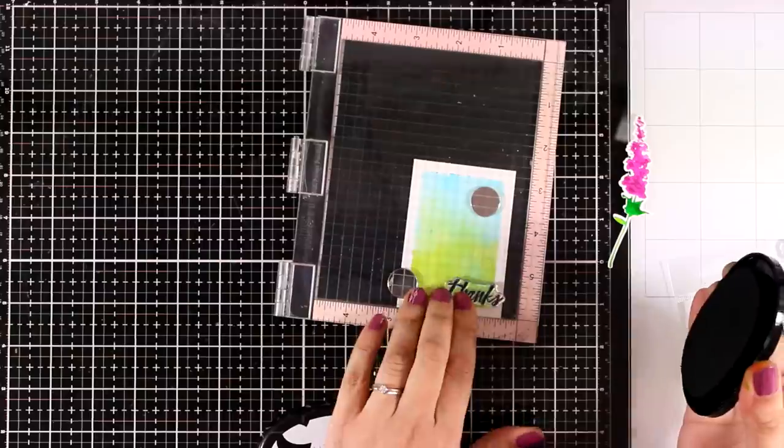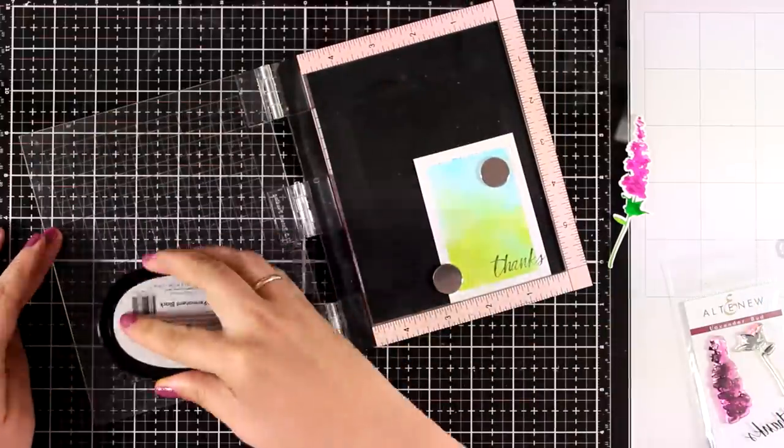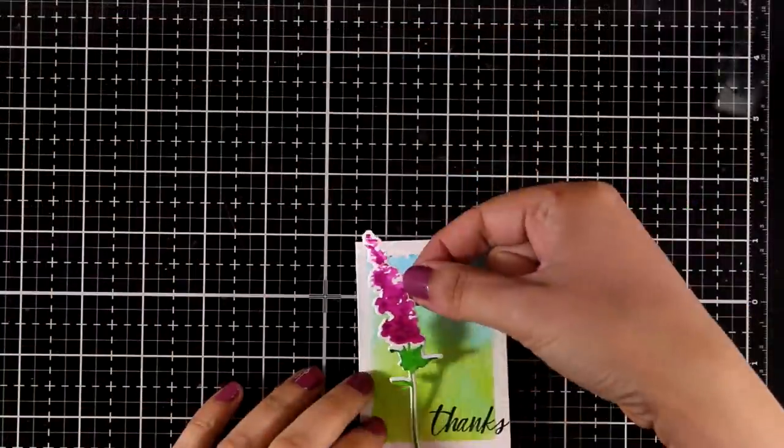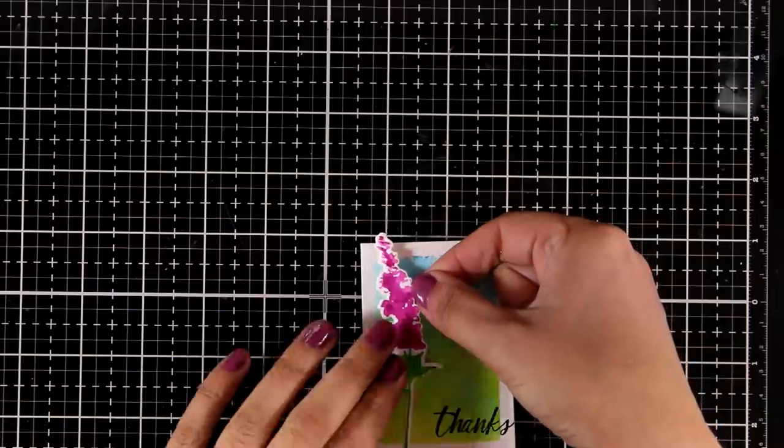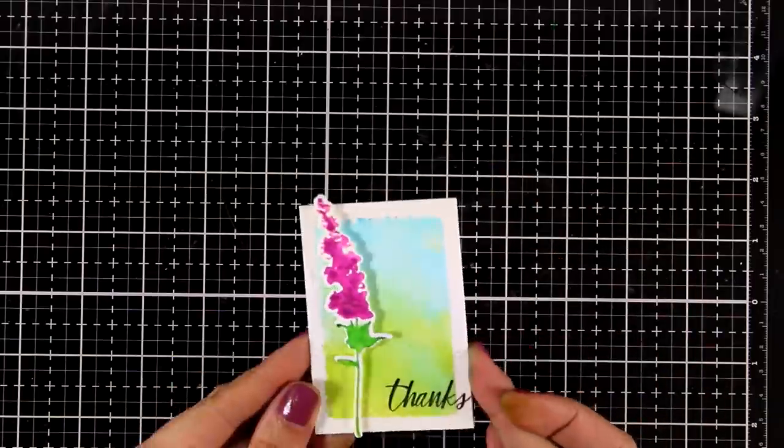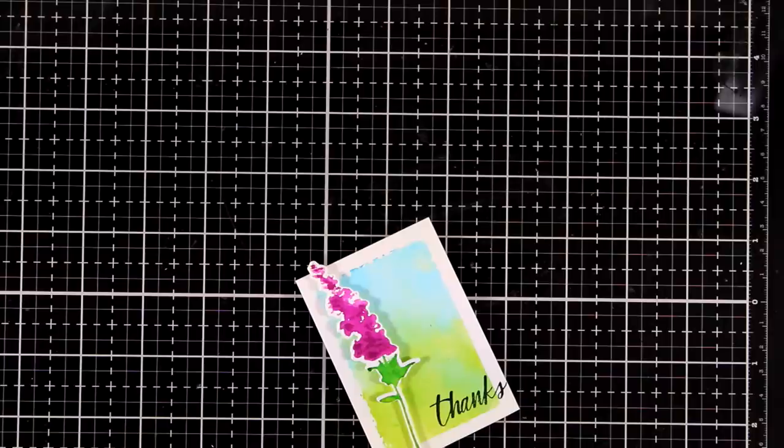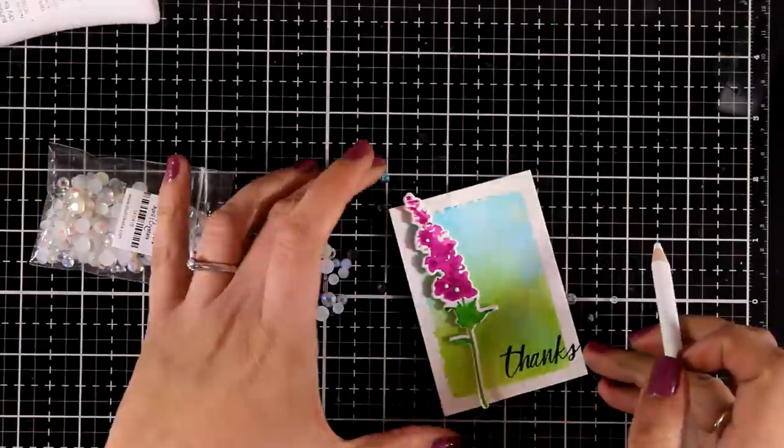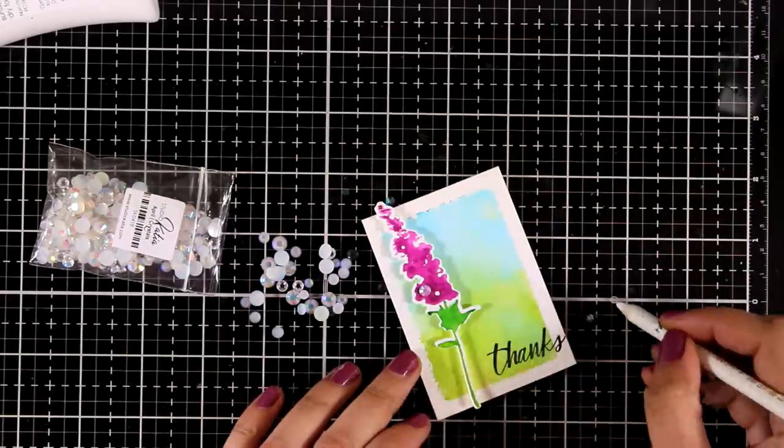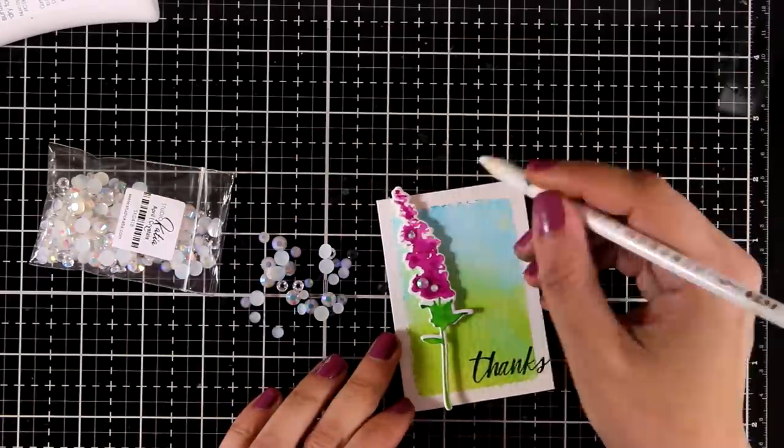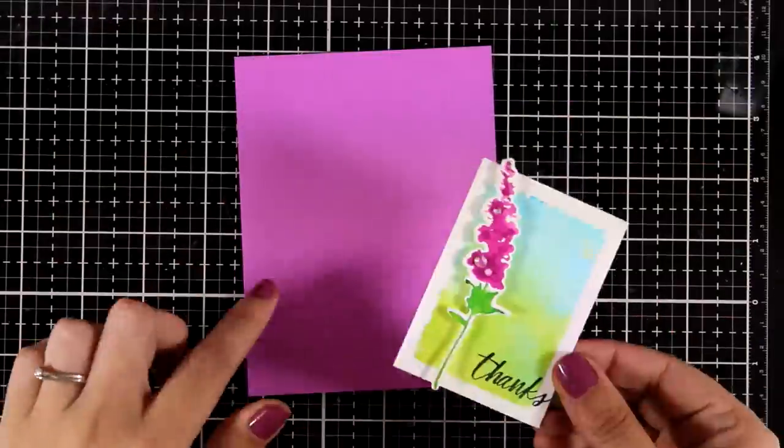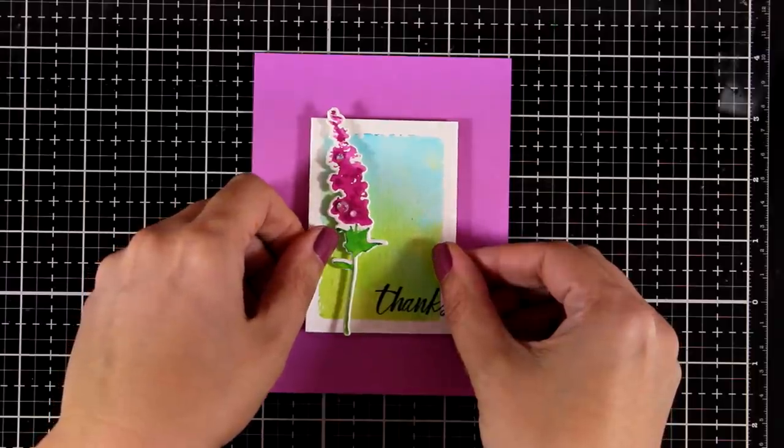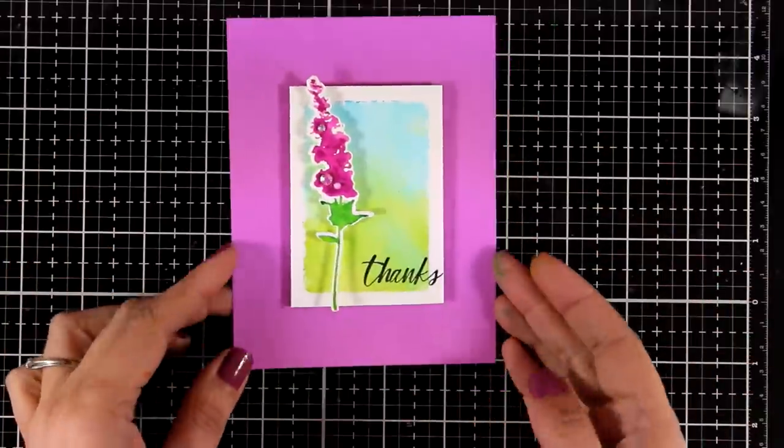Now the same tiny little stamp set comes with a sentiment that says thanks which I'm going to stamp on the background I created earlier with black ink. I have already added foam tape at the back of my flower. I'm going to stick that on top of my background. And then just to add a little bit of bling I'm going to add a few gems. And for my card base I looked through my stash to find a cardstock that matches perfectly the color of the flower. So I'm going to add this panel that I have created with foam tape at the back directly on top and I have a lovely card.